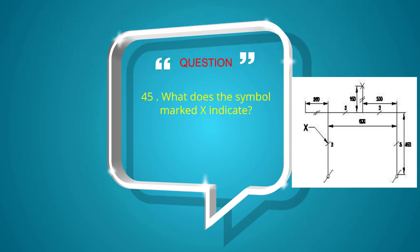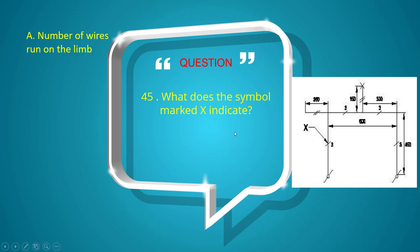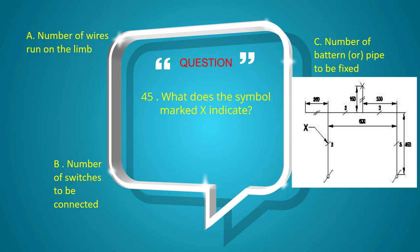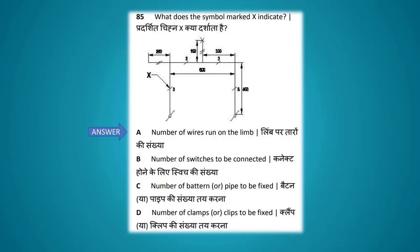What does the symbol marked X indicate in the wiring diagram? Options: number of wires run on the limb, number of switches to be connected, number of batons or pipes to be fixed, number of clamps or clips to be fixed. The answer is number of wires run on the limb.